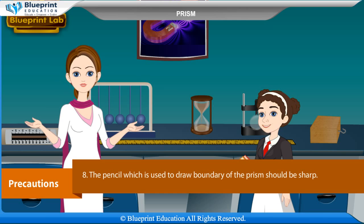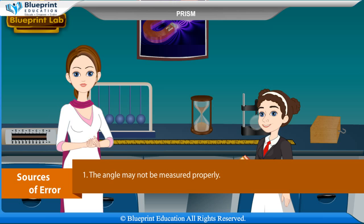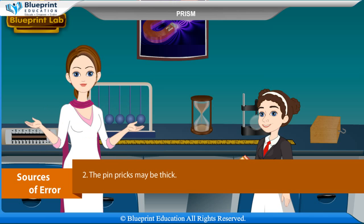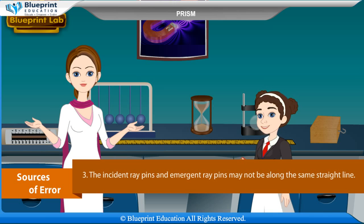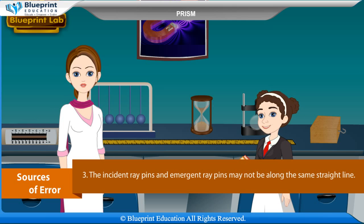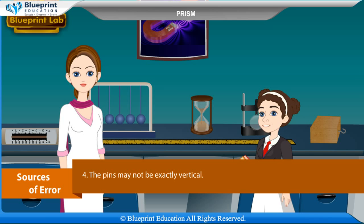The pencil used to draw the boundary of the prism should be sharp. Sources of error: the angle may not be measured properly, the pin pricks may be thick, the incident ray pins and emergent ray pins may not be along the same straight line, and the pins may not be exactly vertical. Thank you, ma'am, for this knowledgeable experiment.